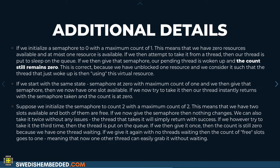A few things to note: if we initialize the semaphore to zero with a maximum count of one, then we have zero resources available at the start — the next call to take will queue the thread and it must wait. If we initialize it to one, the semaphore is available so the first take completes right away. And if we set the count to two, we can take it twice before it becomes blocked — allowing us to control how many items are available or how many threads can continue without blocking.